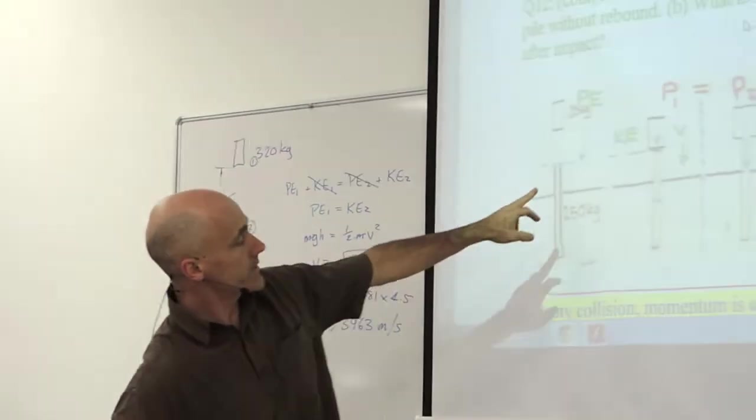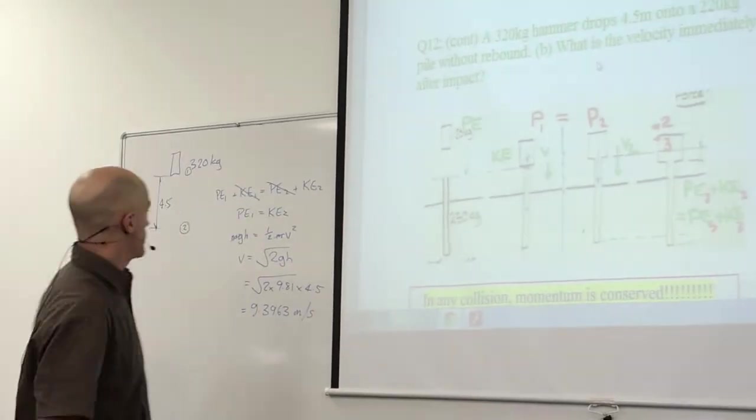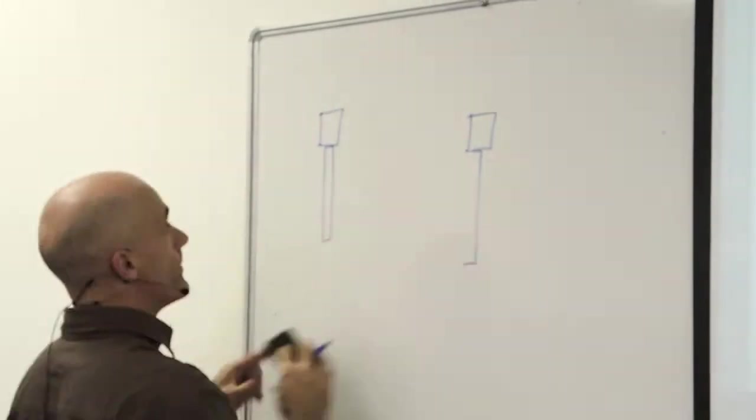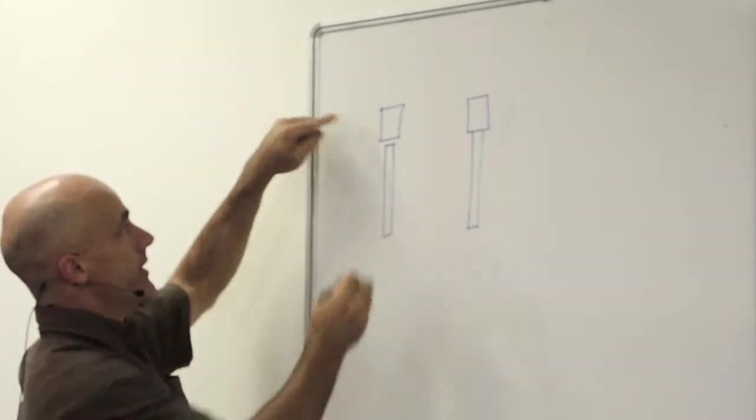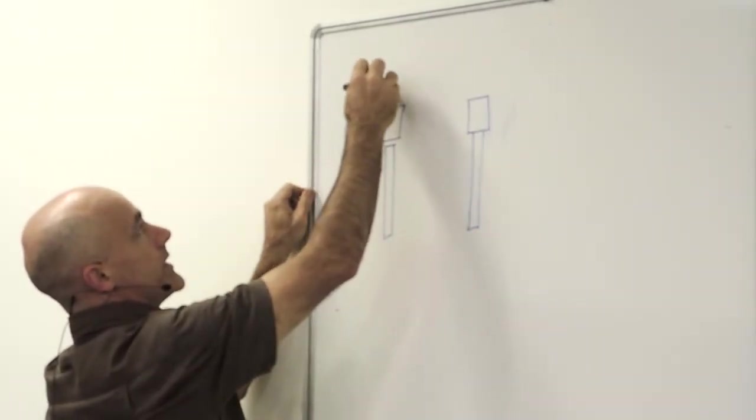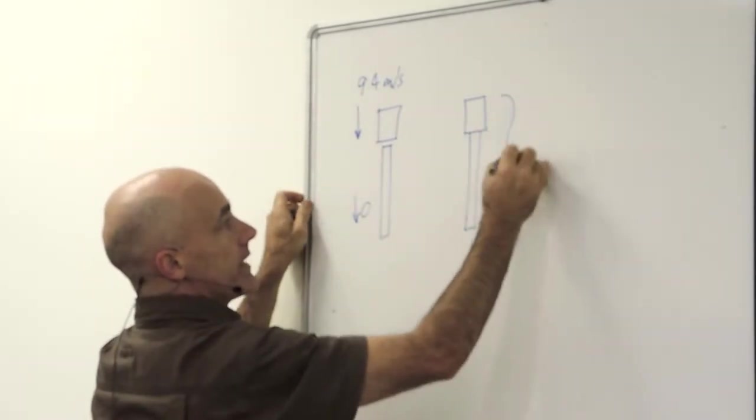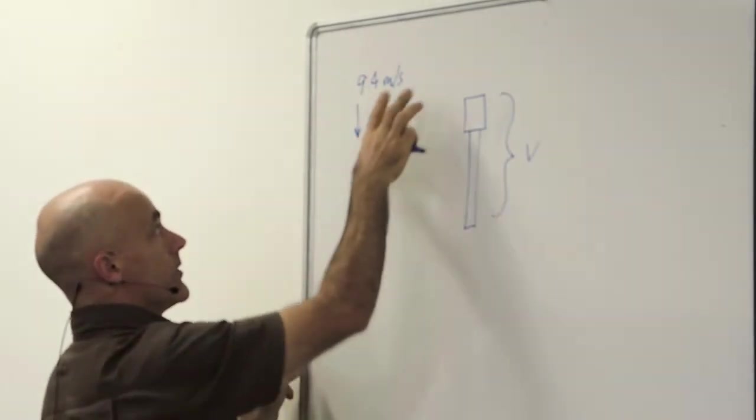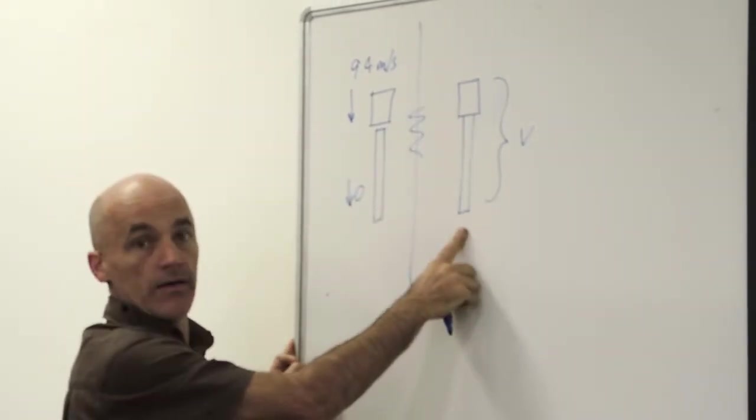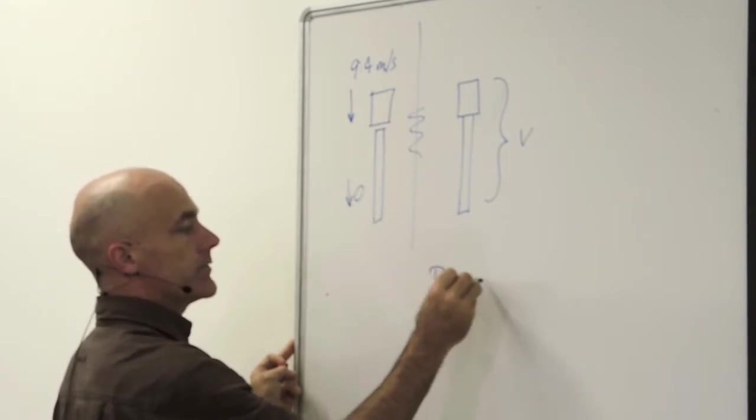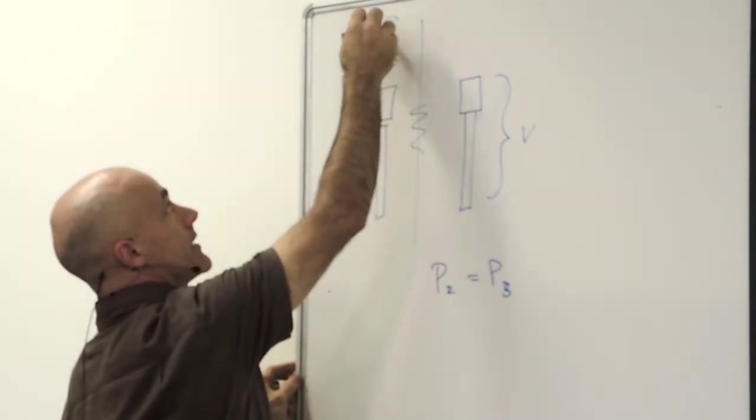Now we're going to collide, we're up to this point. Conservation of momentum, and we've got two masses now. This is before the collision, this is after the collision. Right now, this is traveling at 9.4 meters per second, this is traveling at zero. Here, they're both traveling together at a velocity we don't know. The total momentum beforehand, before the collision, then there's a collision, then the momentum after is the same. So P2 equals P3, this is step two, step three.